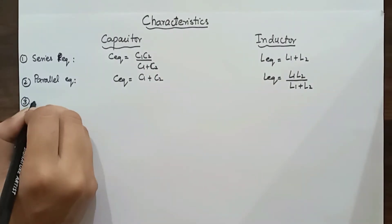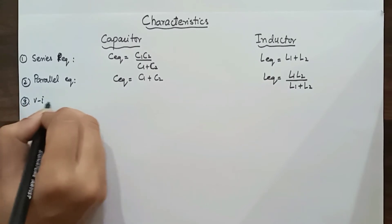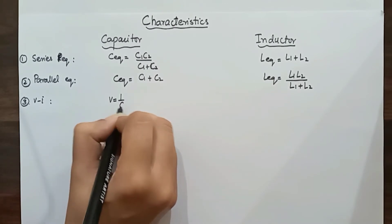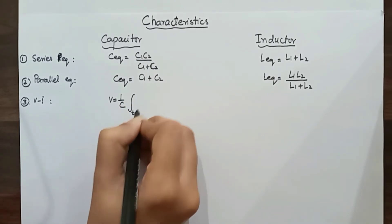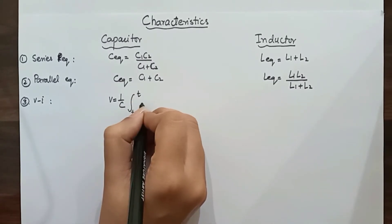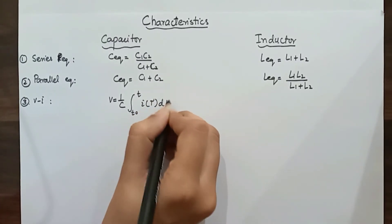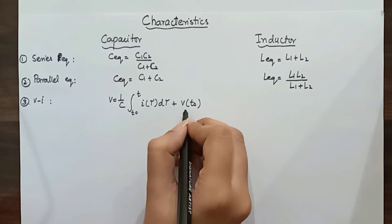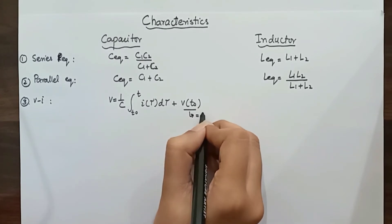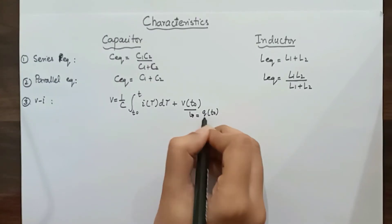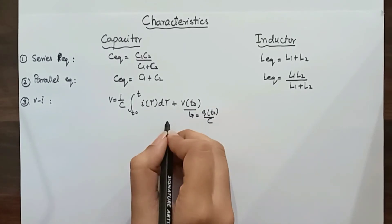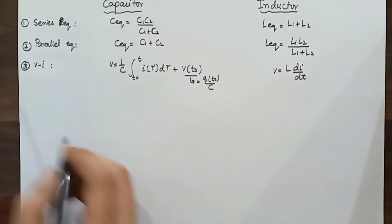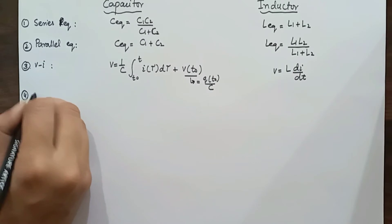Next we have the voltage-current relationship for a capacitor. The voltage across a capacitor is essentially the integration of the current across the capacitor: V = (1/C) × integral from t-naught to t of current dt, plus the voltage across the capacitor at time t-naught, which equals q(t-naught) over capacitance, since q = CV.